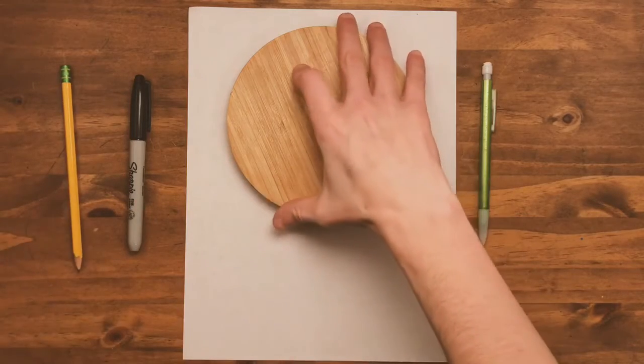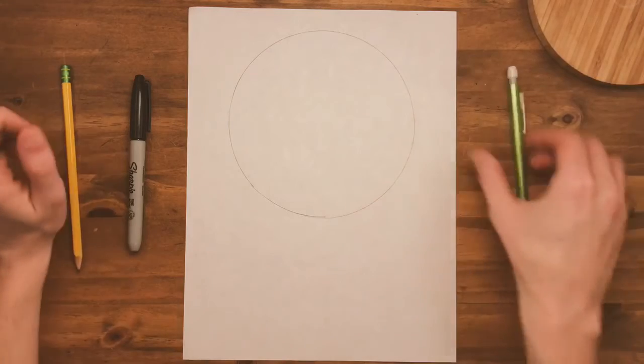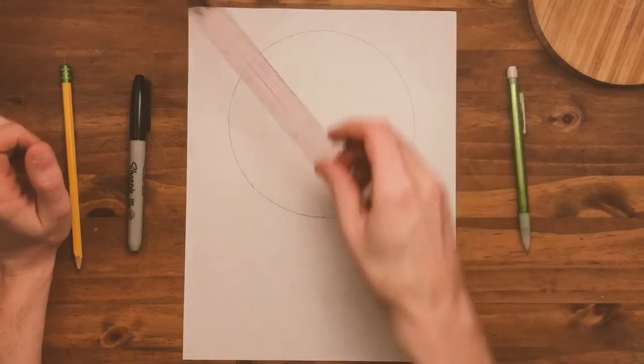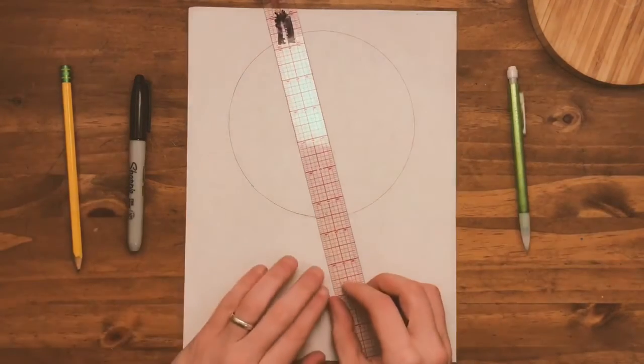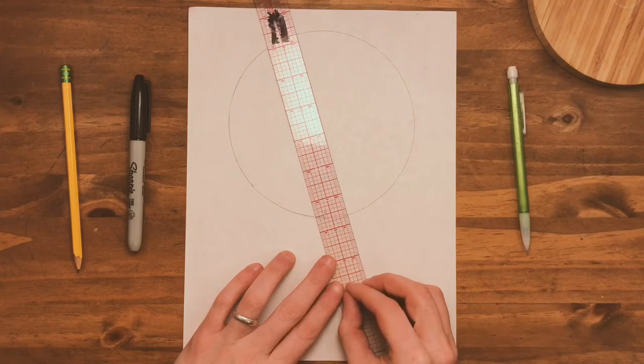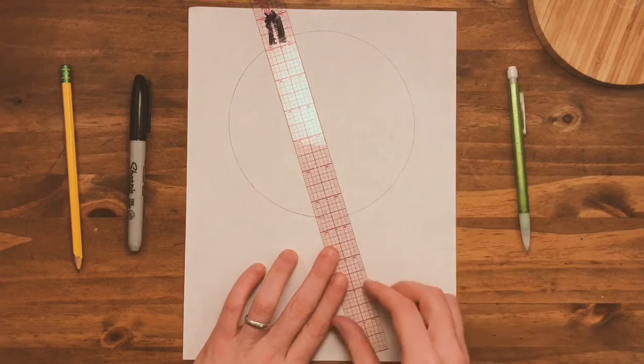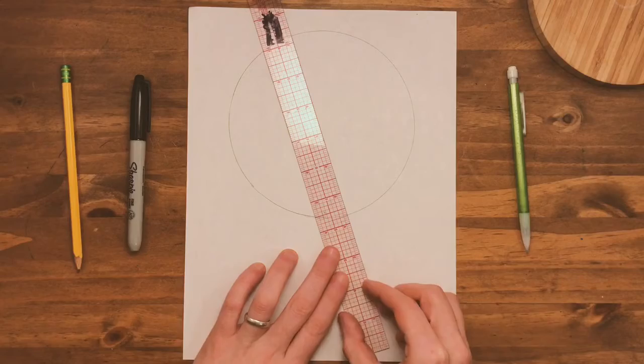After you trace your circle, you can put the stencil aside. You will not need that again. Next, you're going to pick up your straight edge. We're going to split this into six sections. Line your ruler up diagonally. We want to have a smaller slice at the top. We're going to create an X.